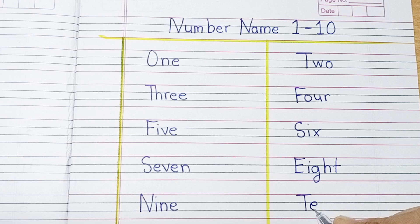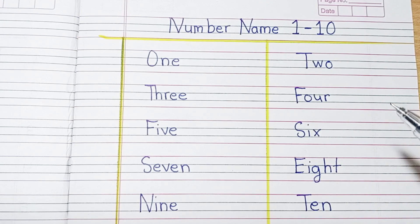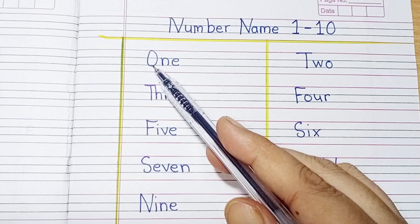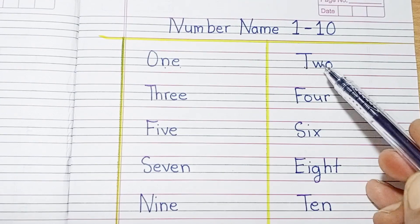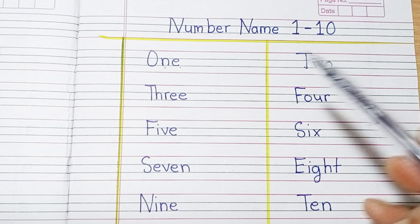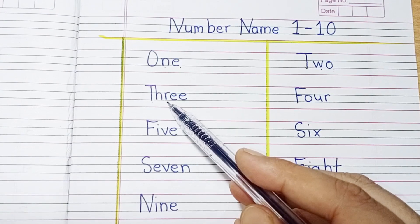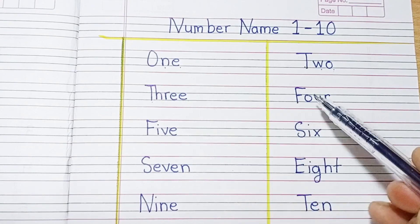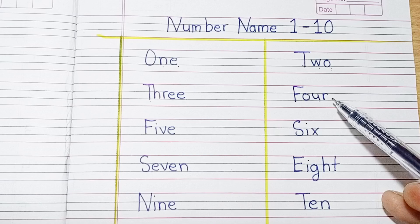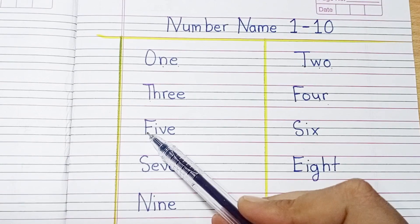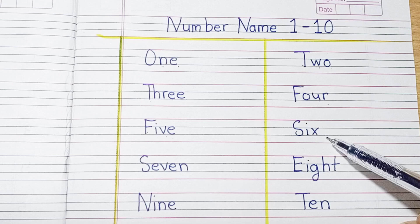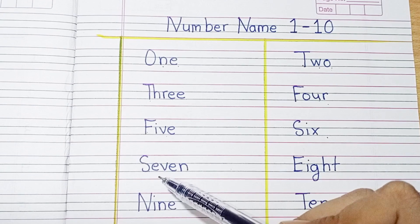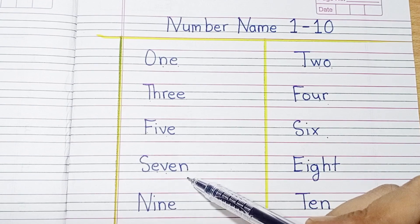T-E-N: 10. Let's revise! 1: O-N-E. 2: T-W-O. 3: T-H-R-E-E. 4: F-O-U-R. 5: F-I-V-E. 6: S-I-X. 7: S-E-V-E-N.